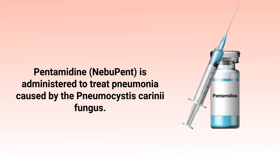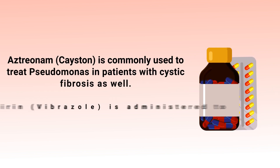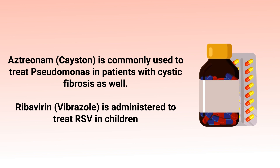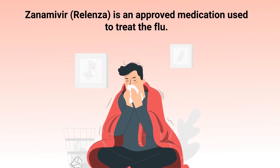Pentamidine, also known as NebuPent, is administered to treat Pneumocystis pneumonia caused by the Pneumocystis carinii fungus. Aerosolized tobramycin, or TOBI, is often administered to treat patients with cystic fibrosis. Aztreonam, or Cayston, is commonly used to treat Pseudomonas in patients with cystic fibrosis as well. Ribavirin, or Virazole, is administered to treat RSV in children, and zanamivir, also known as Relenza, is an approved medication used to treat the flu.